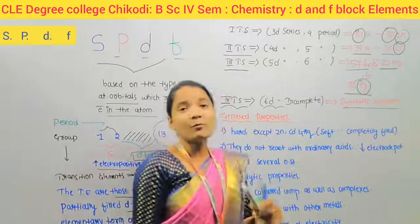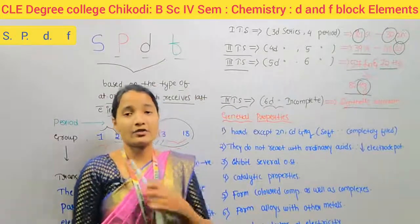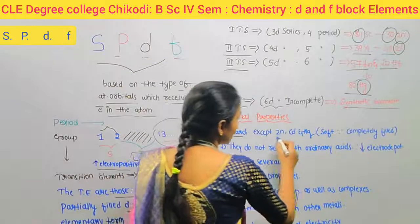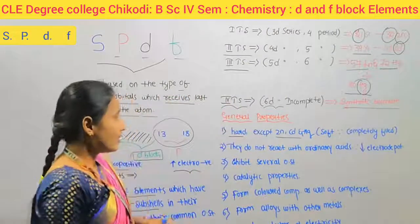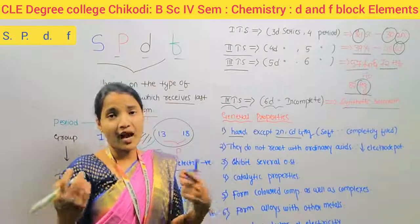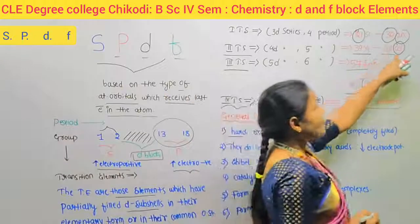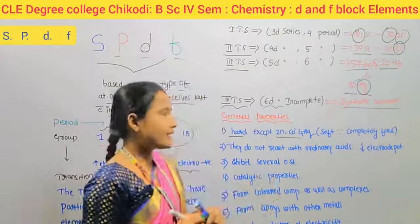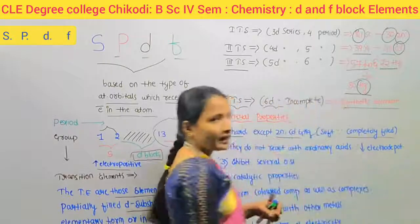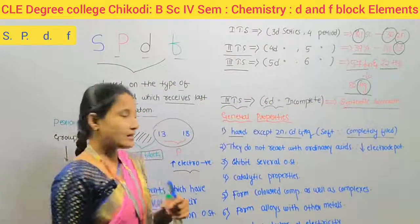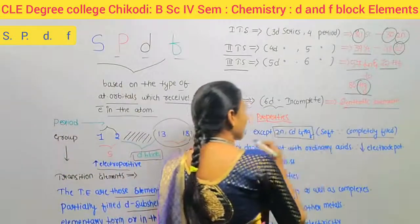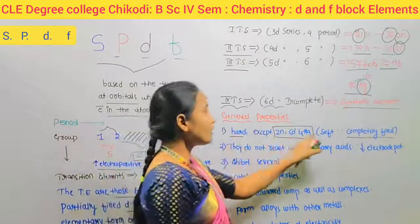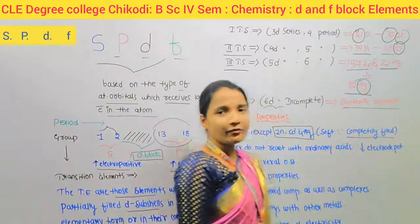Moving to the general properties of D-block elements: these elements are generally hard, except zinc, cadmium, and mercury. The reason is that zinc, cadmium, and mercury have completely filled D-orbitals, making them soft in nature.